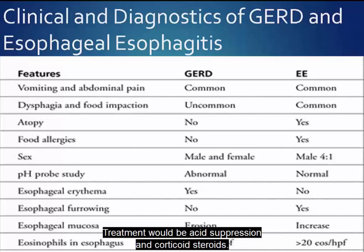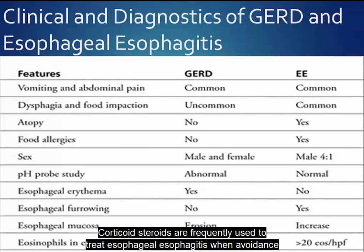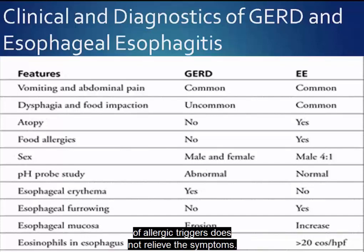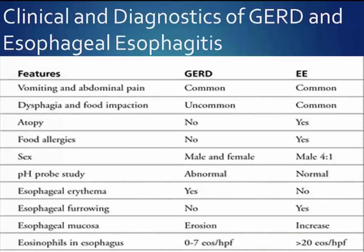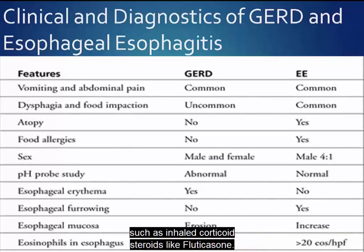Treatment would be acid suppression and corticosteroids. Corticosteroids are frequently used to treat eosinophilic esophagitis when avoidance of allergic triggers does not relieve the symptoms. Corticosteroids may be used orally, like prednisone, or as a topical therapy such as inhaled corticosteroids like fluticasone.